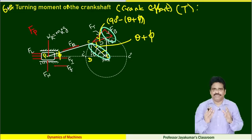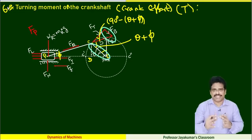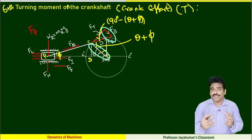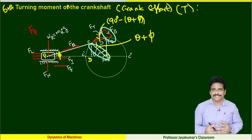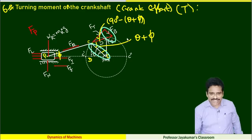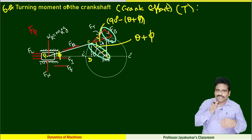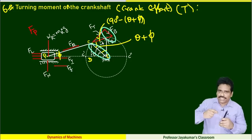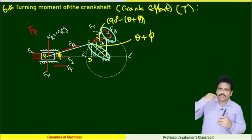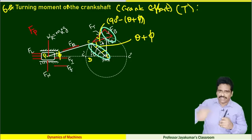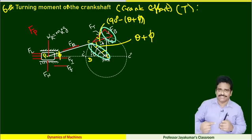Finally, we have to find turning moment on the crankshaft, which we call torque T, also known as crank effort. The force component acting perpendicular to the crank at the crank pin is the one which makes the crank turn and rotate.